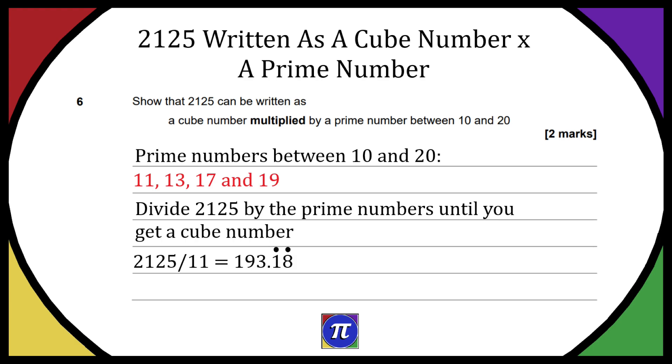So when we divide it by 11 we get 193.18 recurring, that's not a cube number. Divide it by 13 we get 163.5, that's not a cube number.